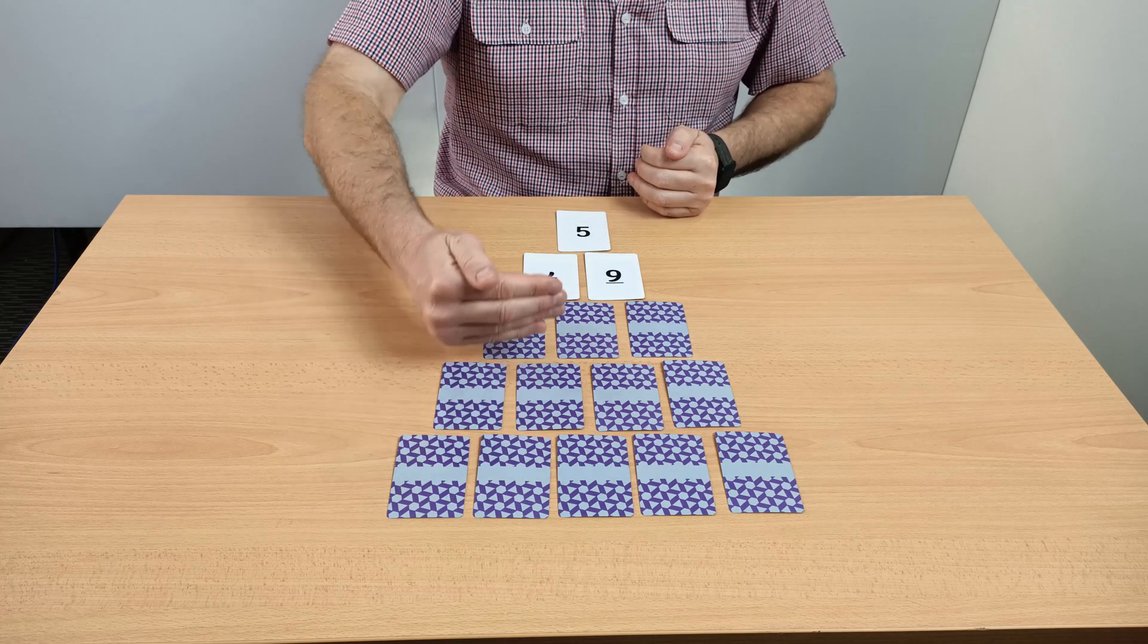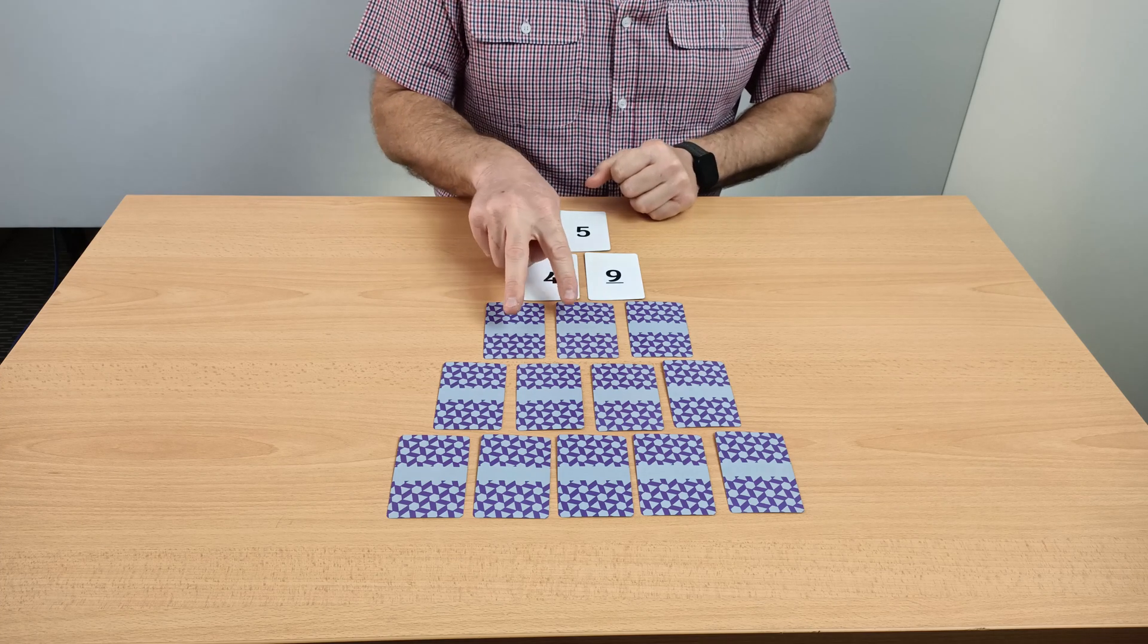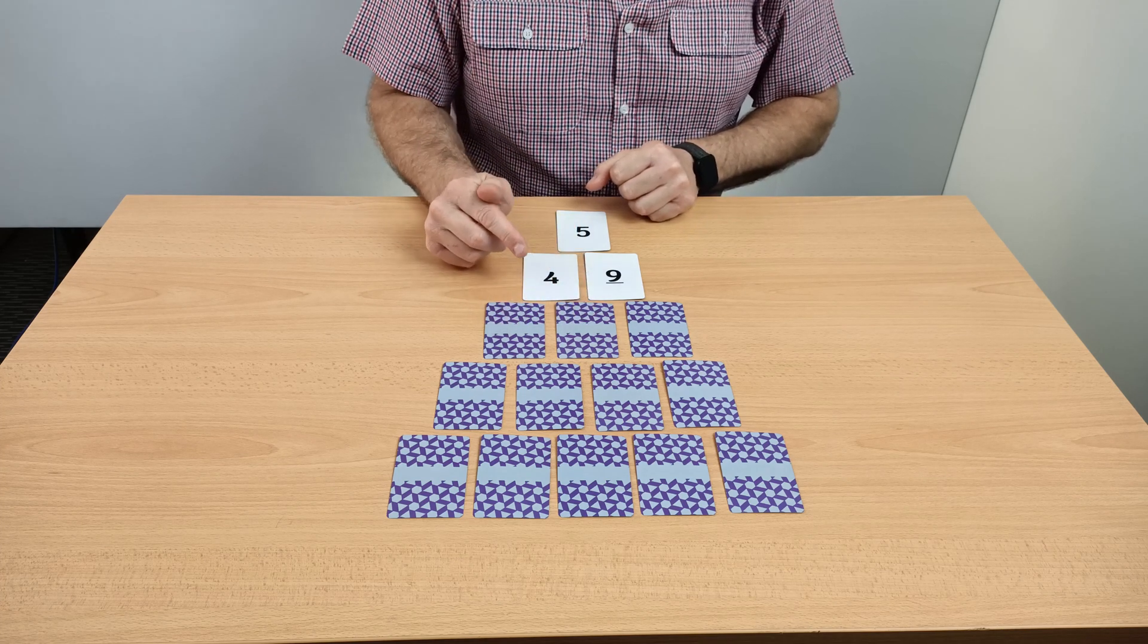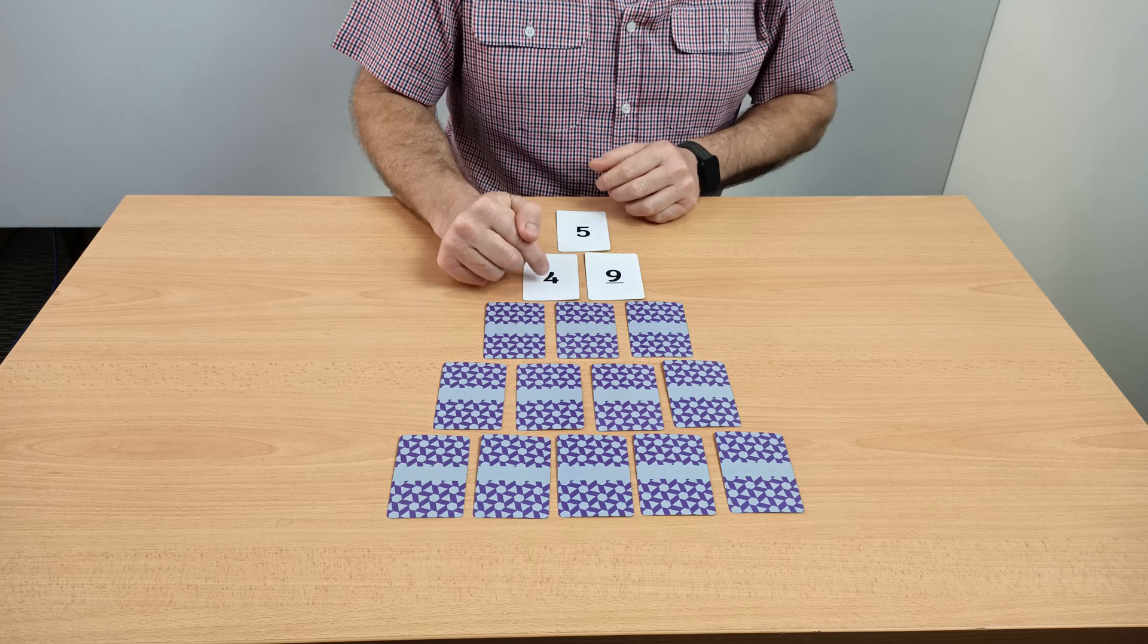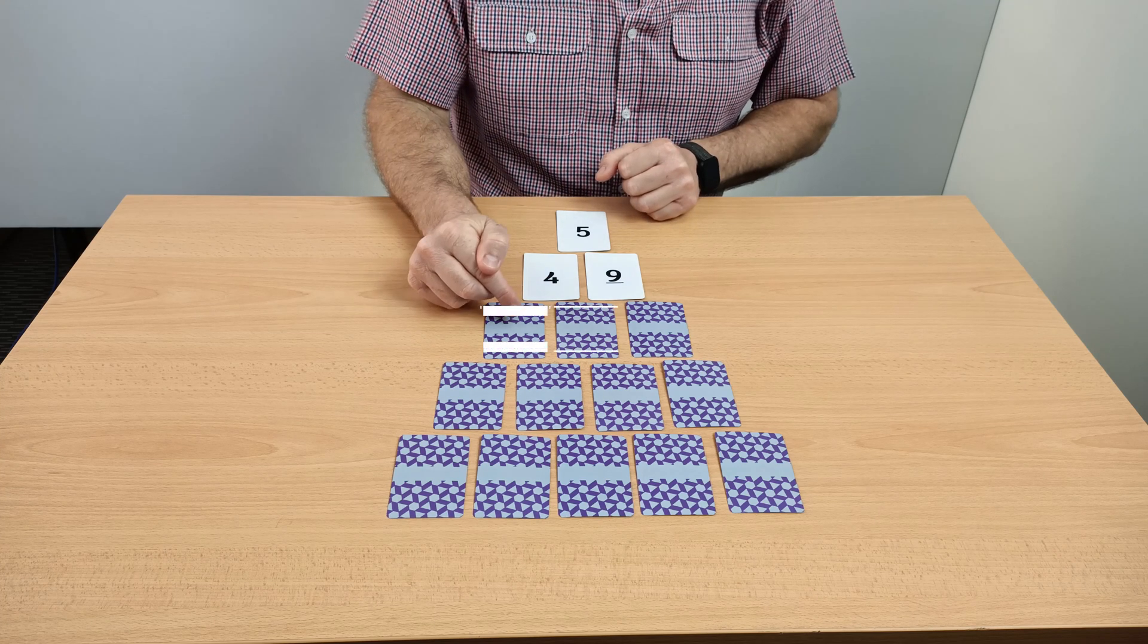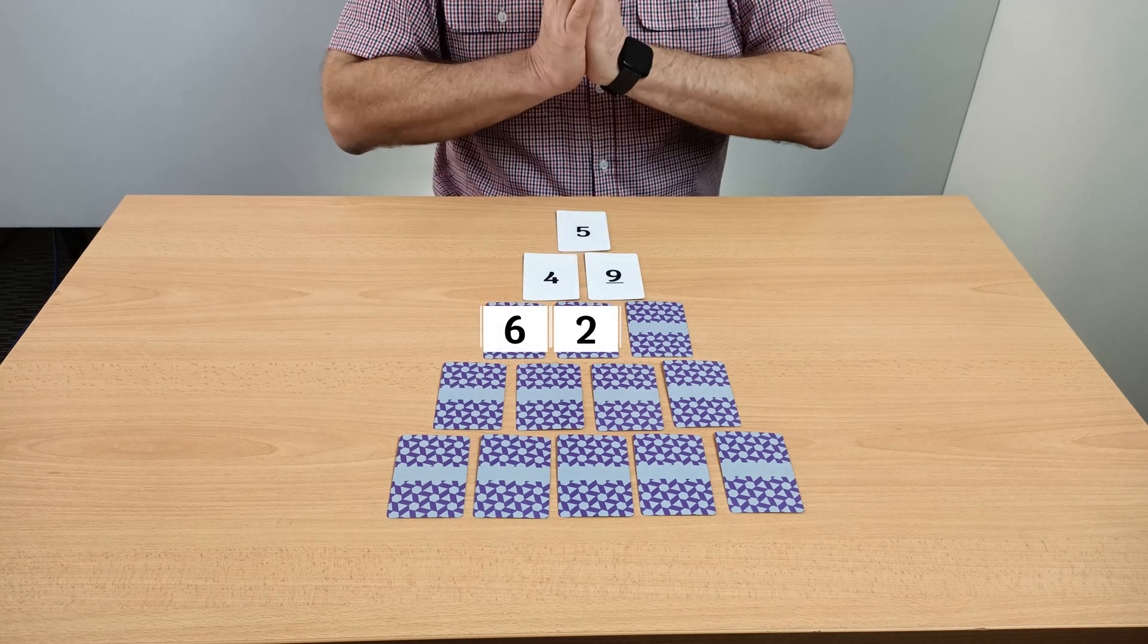So essentially we're working from this end up. So for example those two cards there might have a difference of four so they might be six and two. That could give me a difference of four.